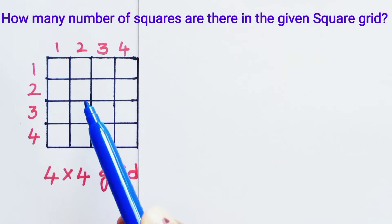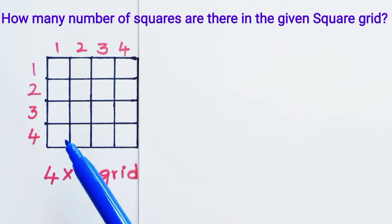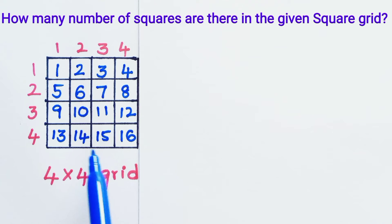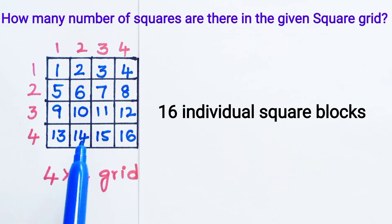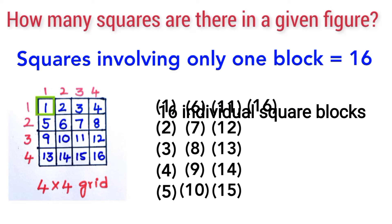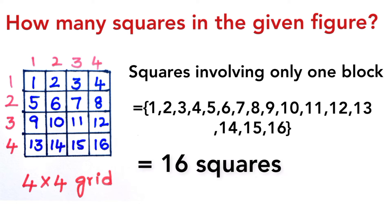To count the number of squares, let us assign a number to each block in the given square grid. After assigning numbers, there are 16 individual square blocks in the 4×4 grid matrix. So the squares involving only one block are totally 16. There are 16 squares which involve only one block.